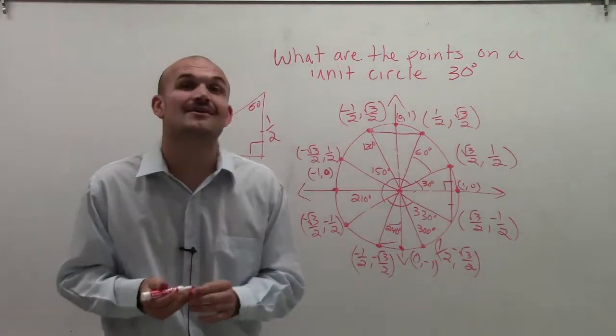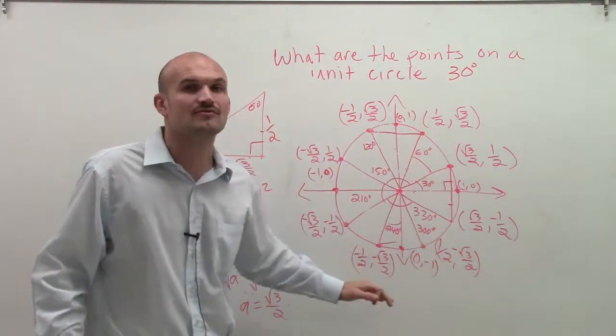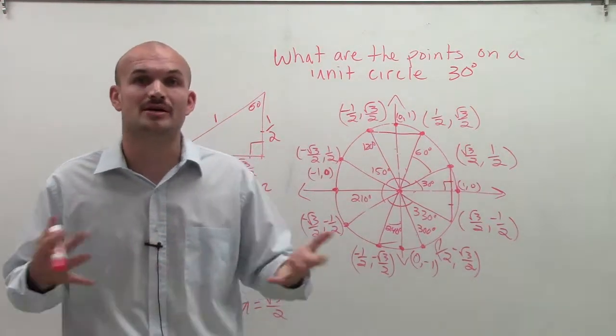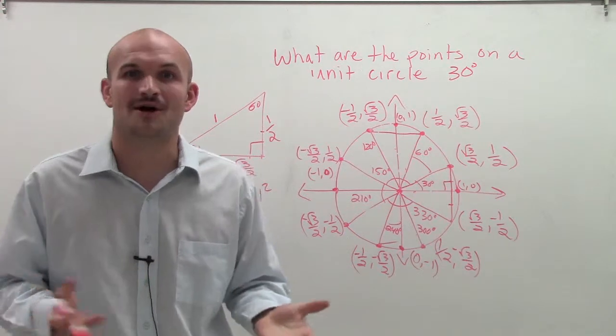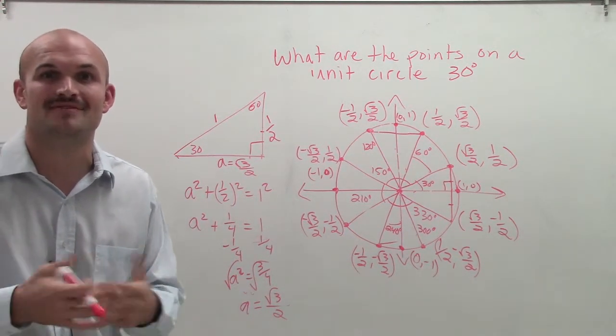So there you go, ladies and gentlemen. I've now just added six more points on our unit circle when we started with our original four. But these are now going to be six more important points we can use to be able to help us construct the unit circle. There you go. I hope you enjoyed. Thanks a lot. Make sure you subscribe. Ask any questions you have. Thanks.